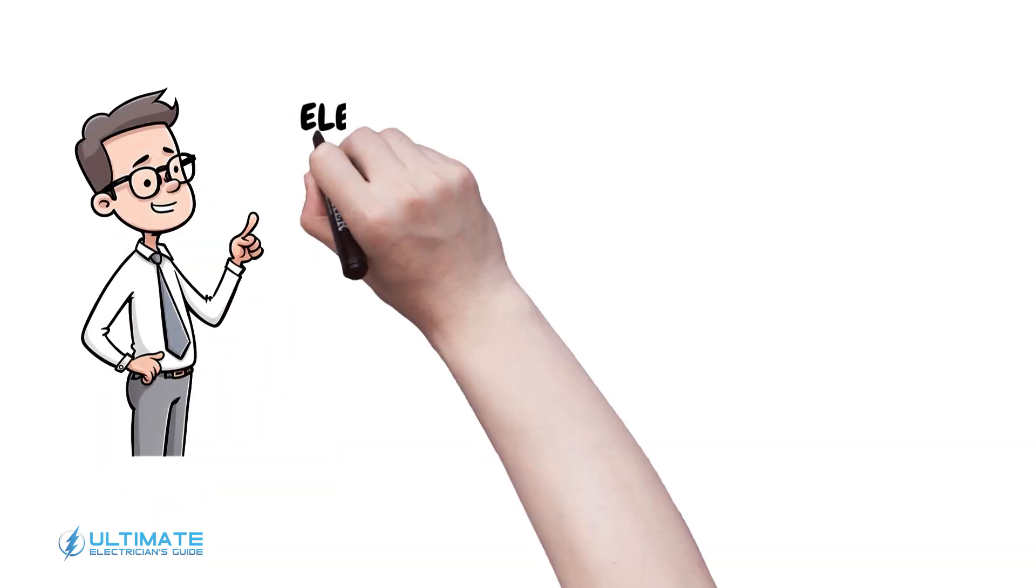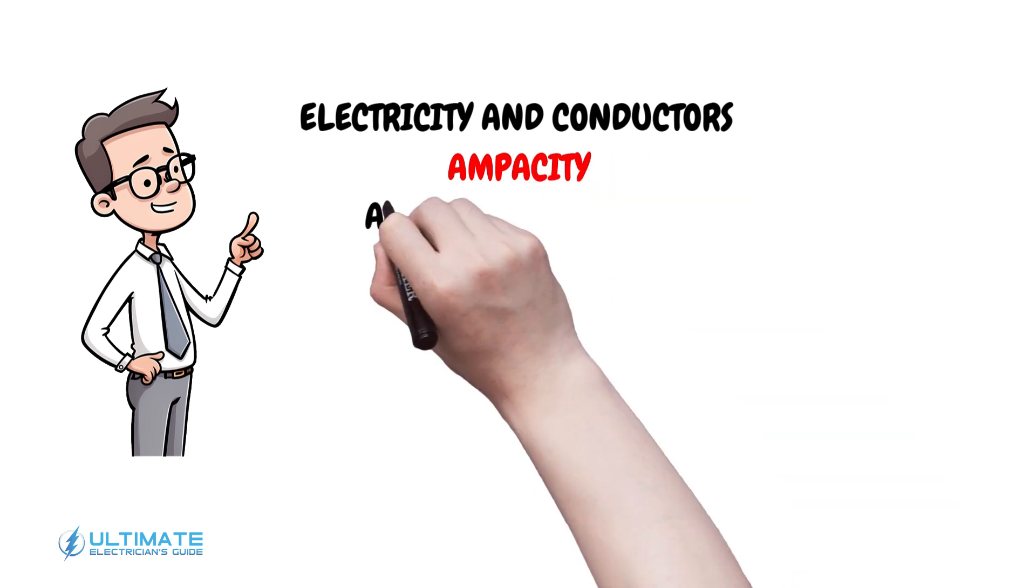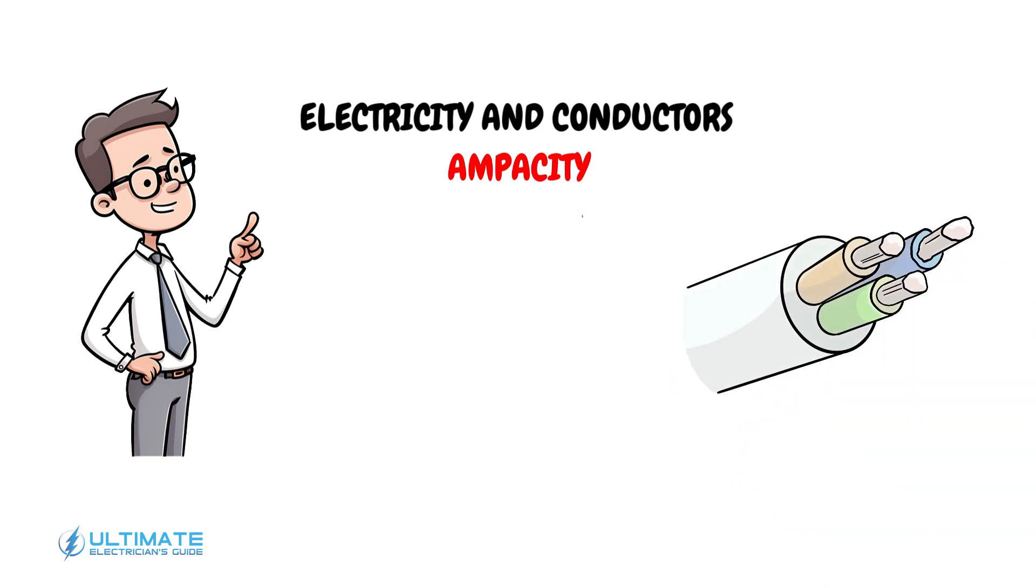When we talk about electricity and conductors, a key term you'll hear is ampacity. Ampacity is a blend of the words ampere and capacity, representing the maximum electrical current a conductor can carry without overheating.